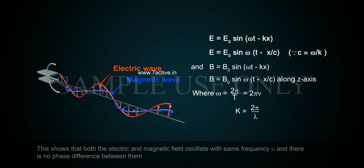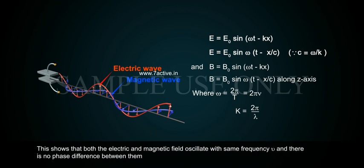This shows that both the electric and magnetic fields oscillate with same frequency ν and there is no phase difference between them.